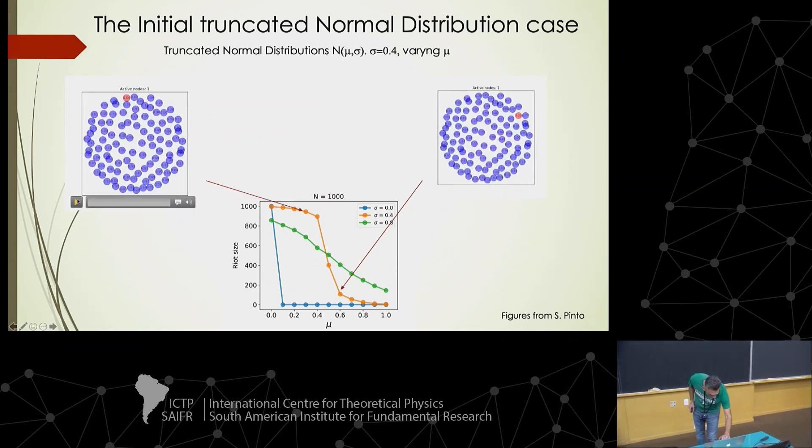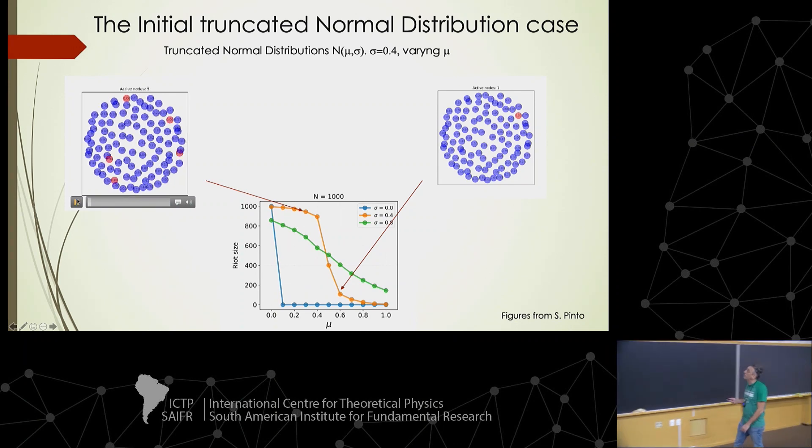We can understand this by plotting the cumulative distribution of this truncated normal for different standard deviations. We can see how the equilibrium point is very low in some cases and moves to higher values in others. If we plot riot size against standard deviation for different means — for instance, for mean 0.4 — we have this jump. The same qualitative behavior occurs if we keep the standard deviation fixed and move the mean of the distribution.